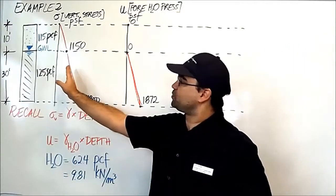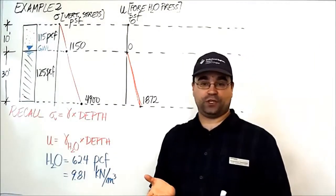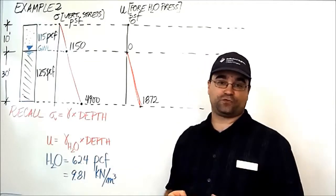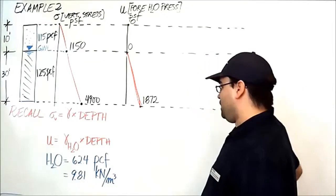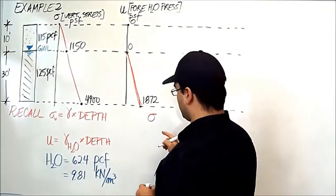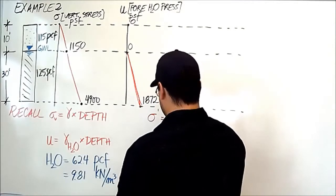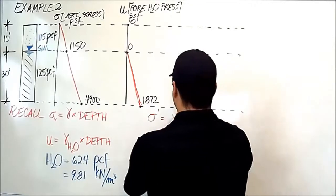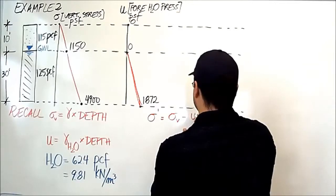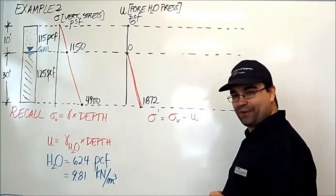So here we have the vertical stress. Here we have the pore water pressure. We are now ready to do the calculation for the effective vertical stress. Do you remember what the formula is for effective vertical stress? It is effective vertical stress, which is sigma prime, or just sigma, is equal to the vertical stress minus the pore water pressure.